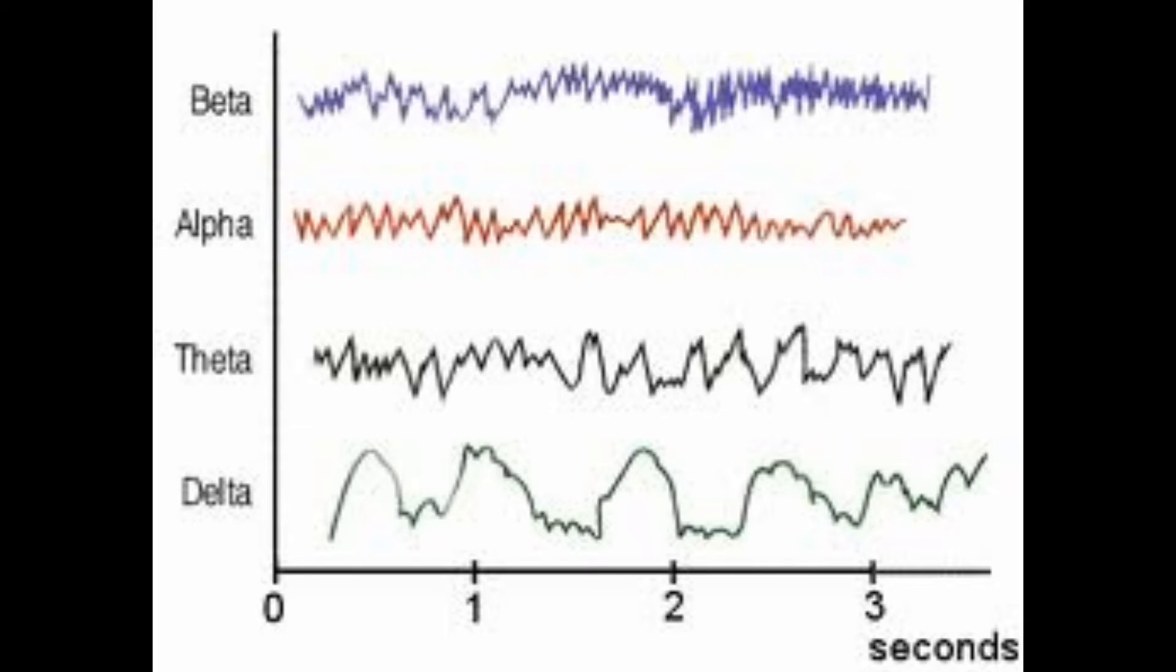Second, theta. It goes from 4 to 8 hertz. This is in normal infants and children, as well as during sleep in adults.